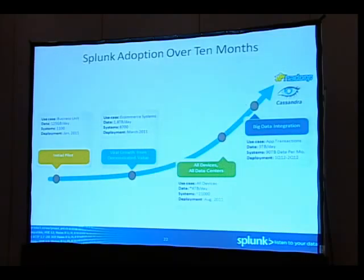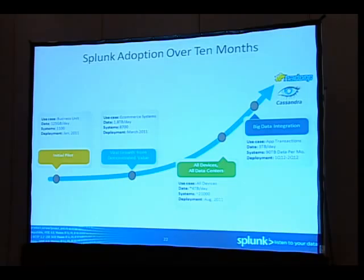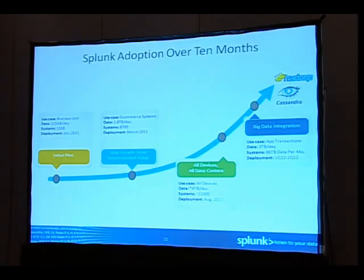Ten months from start to finish for the Splunk implementation at Expedia. It started with a single business unit, 125 gigabytes a day, 1,100 systems — just one web farm and its tiers — in January 2011. By March it was on all e-commerce systems at 1.8 terabytes per day. By August it was 4 terabytes per day across 21,000 systems. Starting this year, the big data integration piece has handled about 90 terabytes per month of ingested data from various sources, with Splunk serving as a visualization tool for both Cassandra and Hadoop.